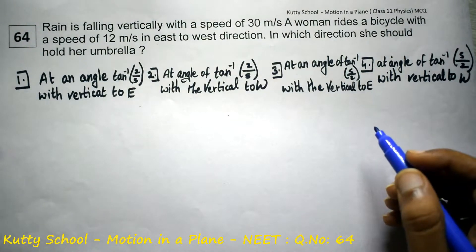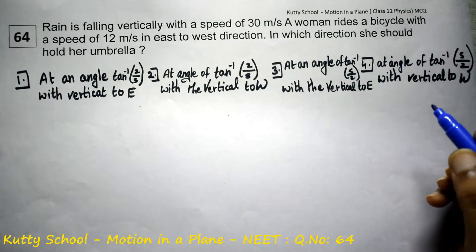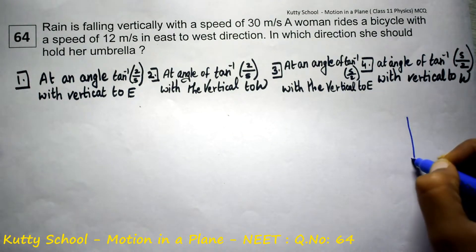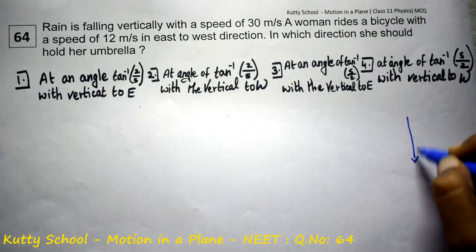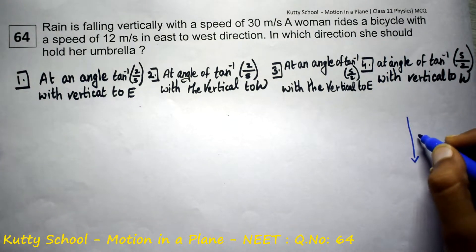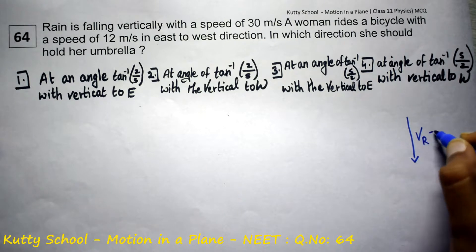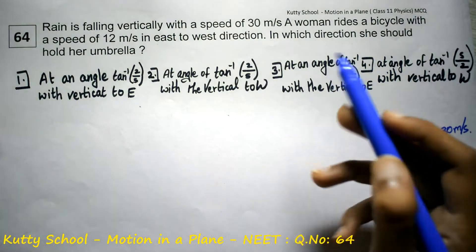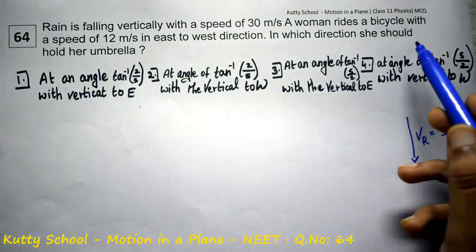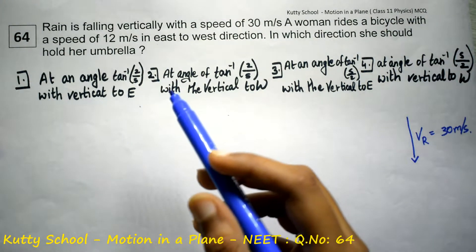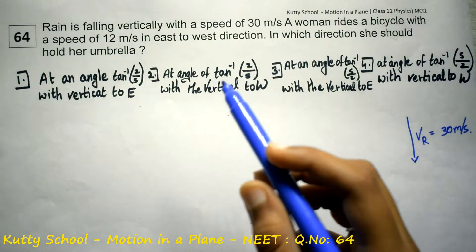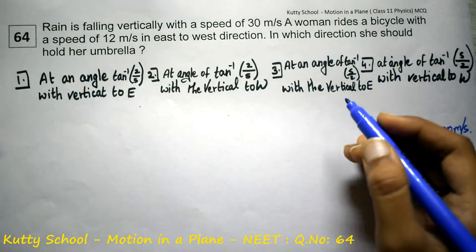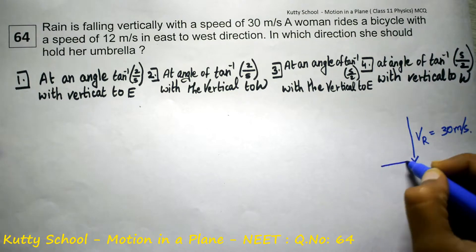Rain is falling vertically with a speed of 30 meters per second. The velocity of rain is 30 meters per second. A woman rides a bicycle with a speed of 12 meters per second in the east to west direction, so the east to west direction is 12 meters per second.